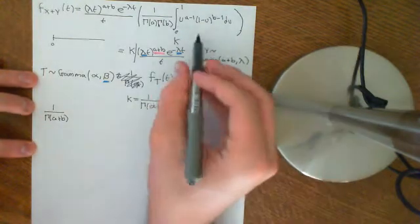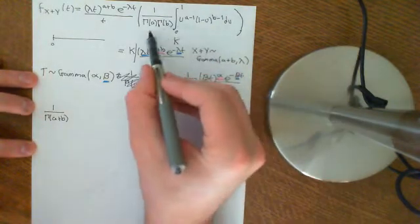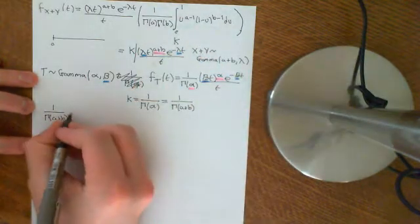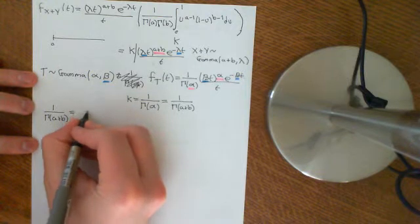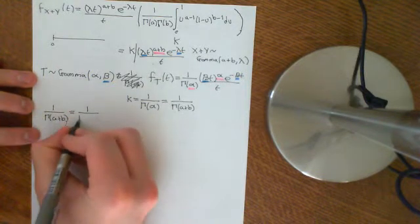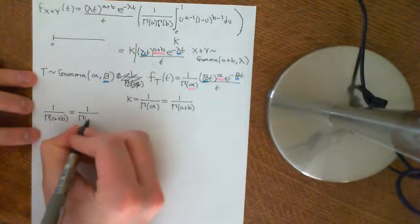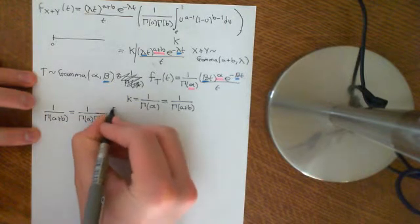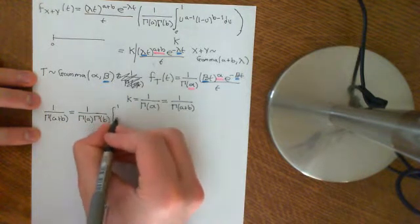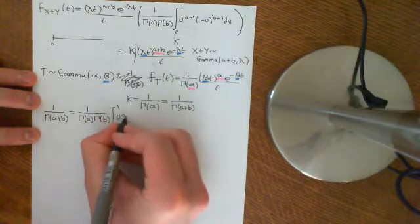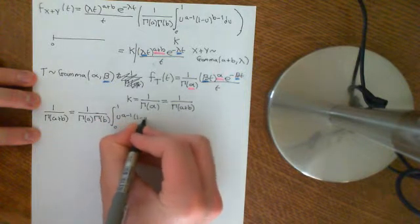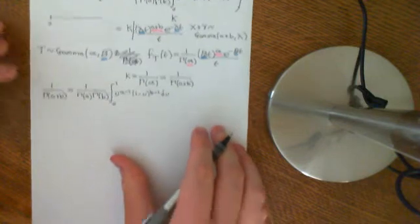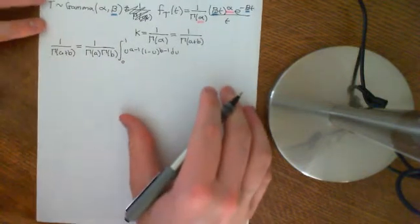Now we're going to use this fact to find the normalizing constant for the general beta distribution. Basically, 1 over Γ(a+b) must equal 1 over [Γ(a) · Γ(b)] times the integral from 0 to 1 of u to the power of a minus 1, times 1 minus u to the power of b minus 1, du.